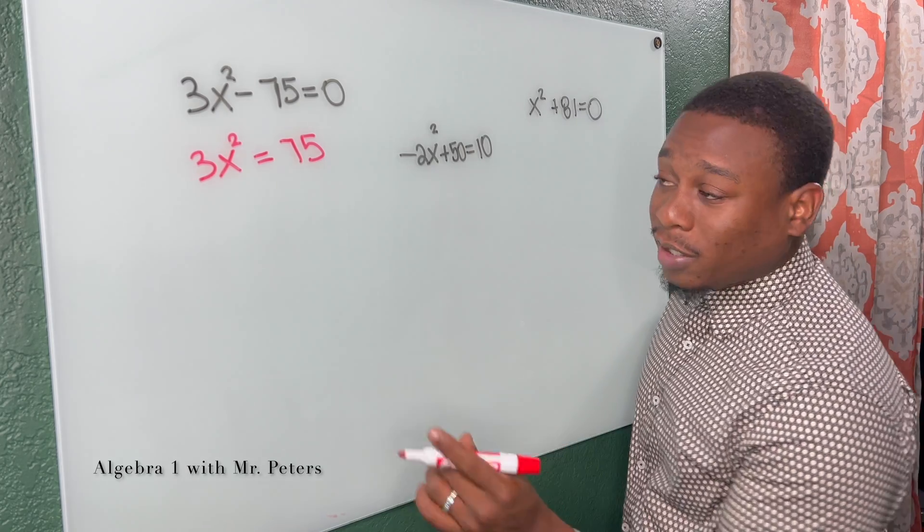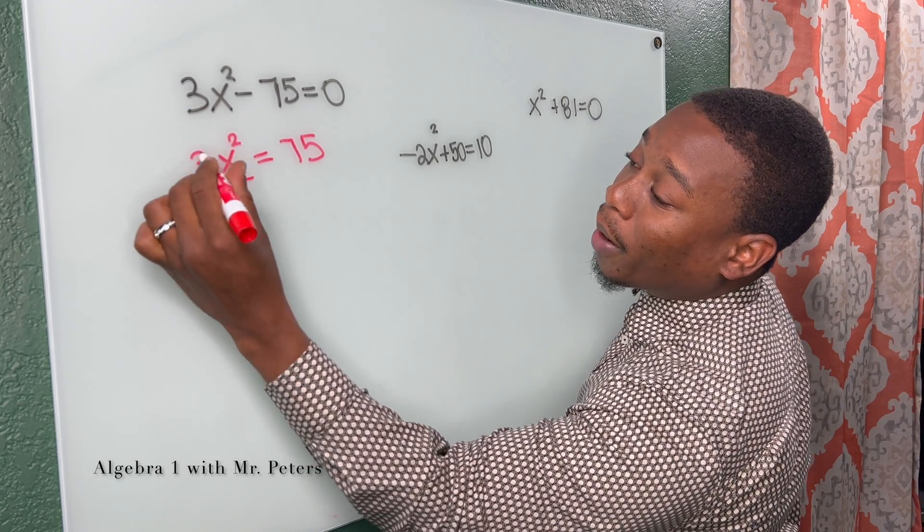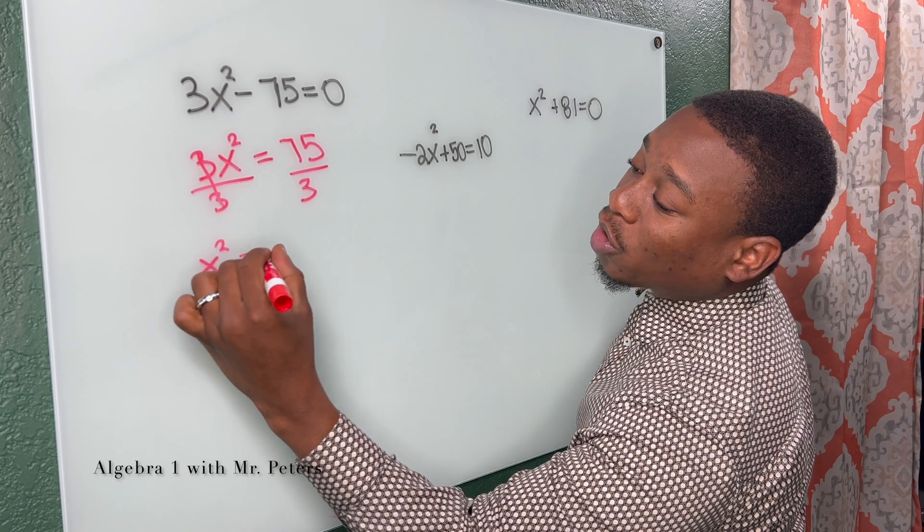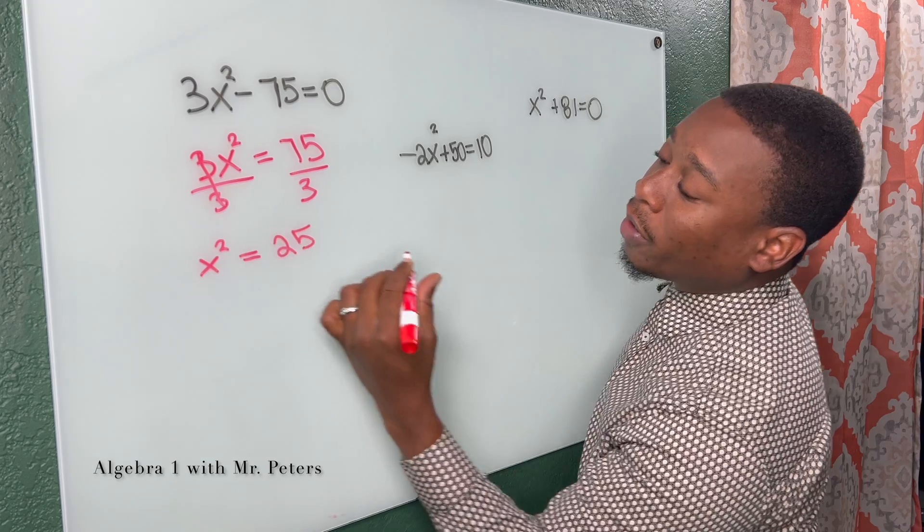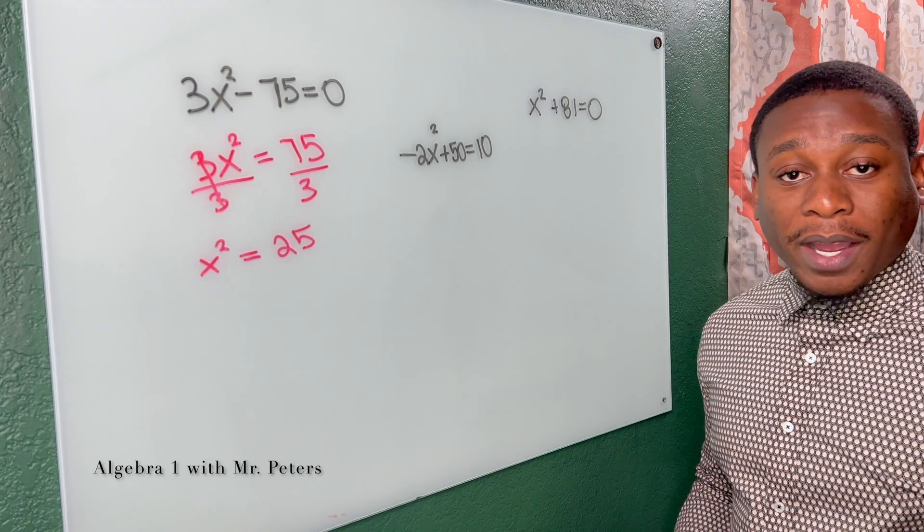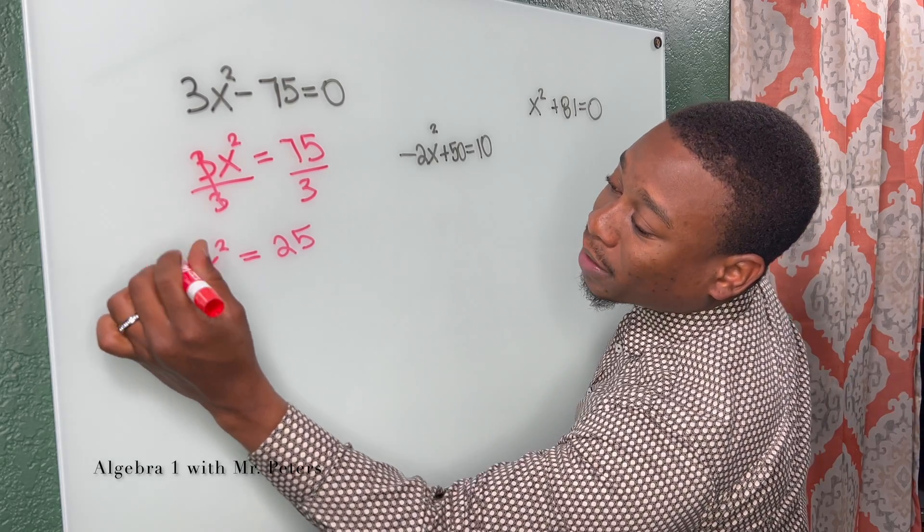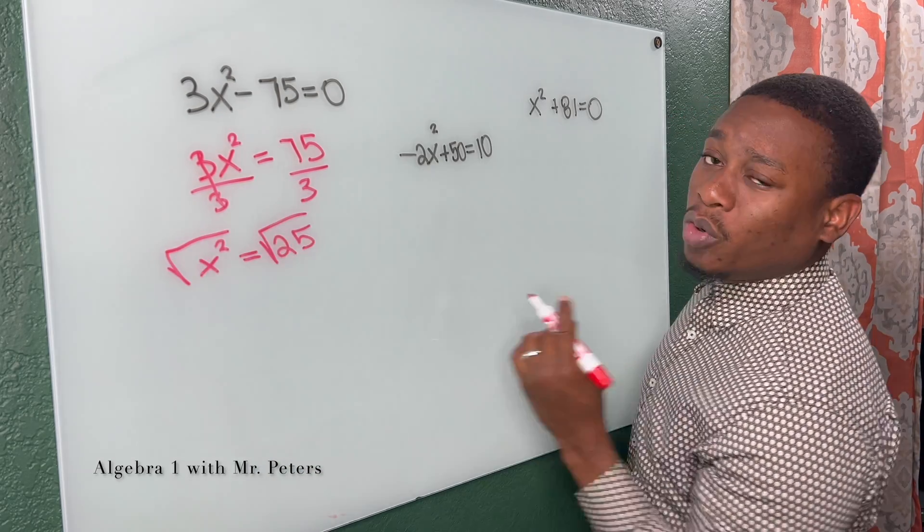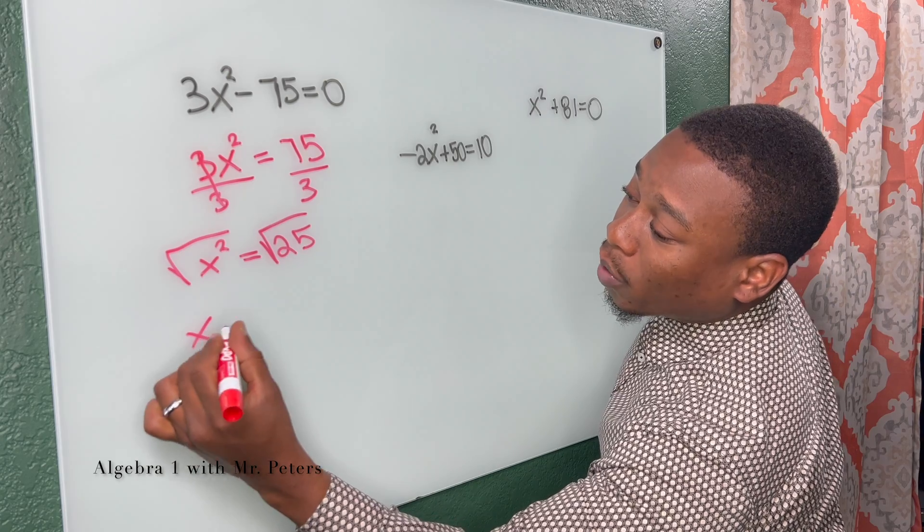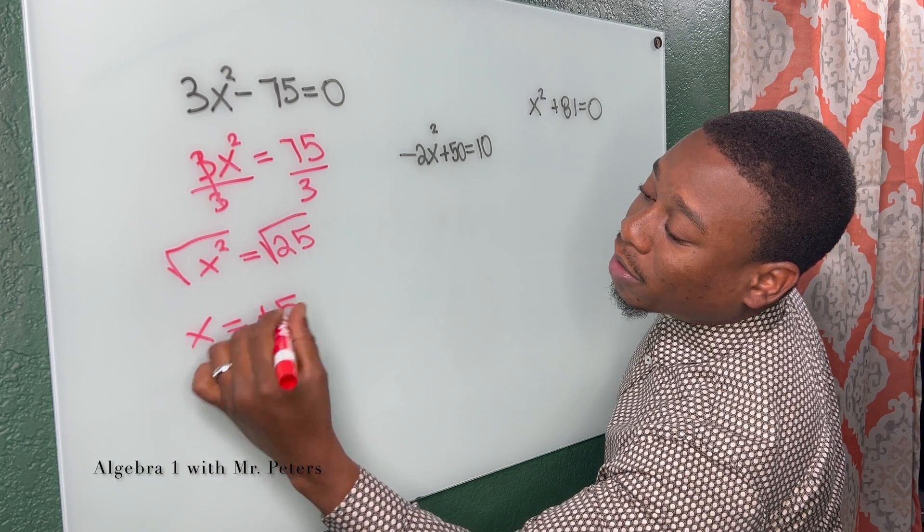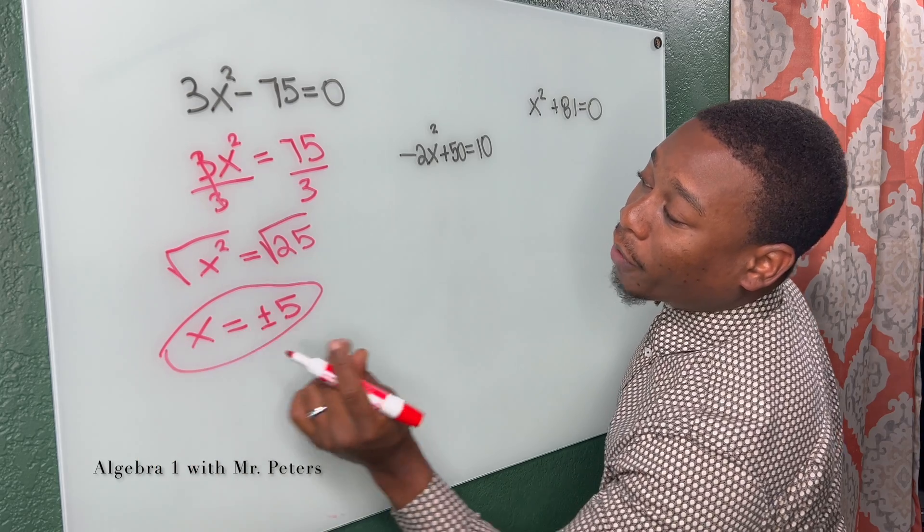So that's the first step, x squared by itself. Yes, it's not totally by itself. So let's divide by 3. Once we do this, now we have x squared is equal to 25. So the x squared term is by itself. Now we just want to get rid of the exponent. And we do that by taking the square root and what we do on one side, we do to the other. So x is now equal to the square root of 25, which is just positive and negative 5.